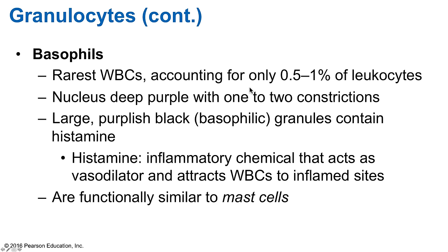Basophils are the rarest of the white blood cells, accounting for only 0.5–1% of all leukocytes. The name comes from their affinity for the basic dye — 'phil' means loving and 'baso' refers to the basic dye, so basophil means loving the basic dye. For eosinophils, the dye loved was eosin, hence eosinophil. Neutrophils pick up both dyes, so they are neutral — hence neutrophil.